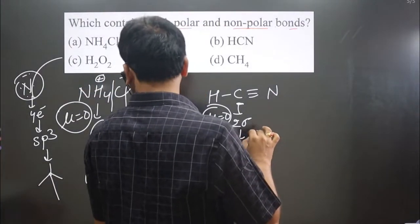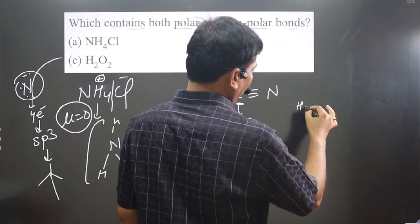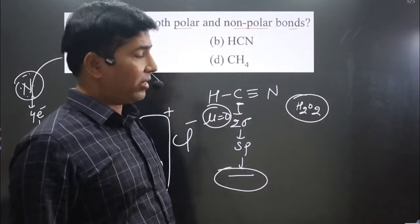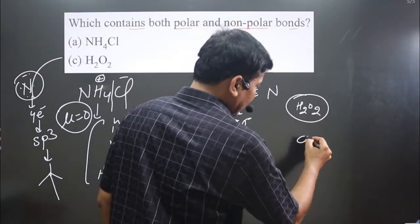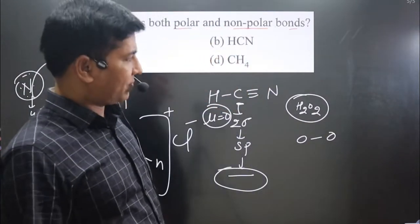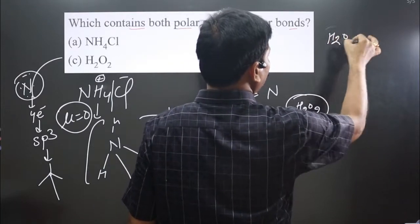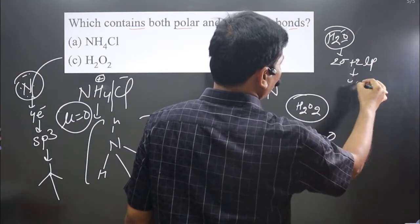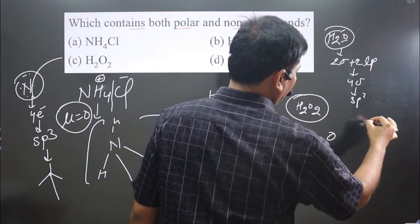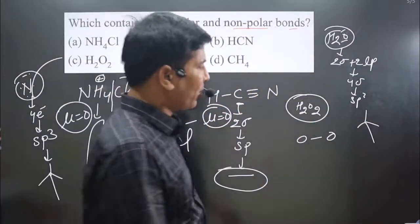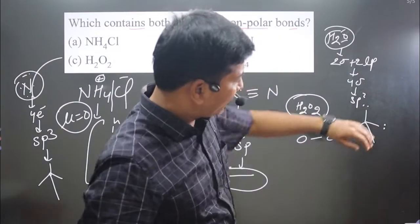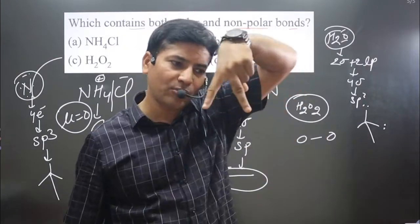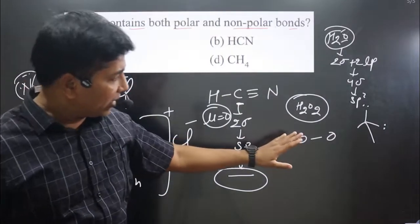Now for H2O2, hydrogen peroxide. Each oxygen forms two bonds and has two lone pairs, similar to the water molecule. In water, oxygen has two sigma bonds plus two lone pairs — four total, giving sp3 hybridization and a tetrahedral electron geometry. But placing the lone pairs gives a V-shape, bent, angular geometry.